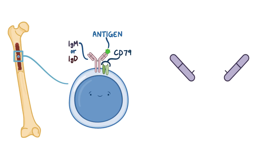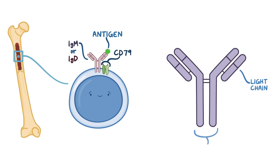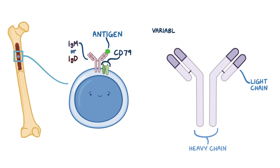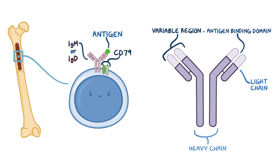Each antibody has two identical light chains and two identical heavy chains that combine into a Y shape. This Y-shaped antibody has two arms with identical tips, which is called the variable region. This variable region contains an antigen-binding domain that's unique to that antibody. Below the variable region, toward the point where the arms meet, is the constant region, where every member of an antibody class is identical.